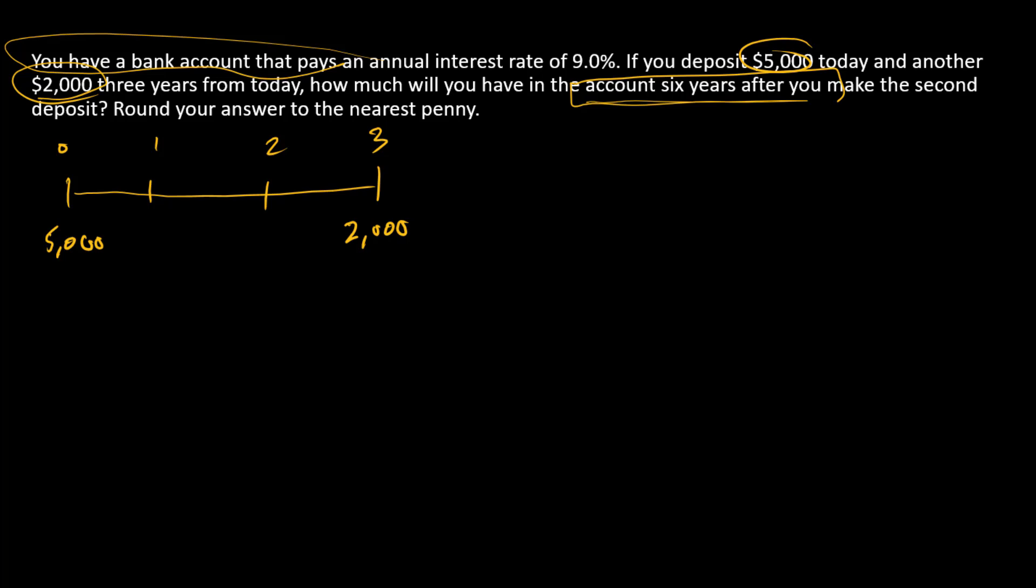Six years after you make the second deposit, we're going all the way out to year nine. And so we're asked to find how much we'll have in the account. So we're looking for a future value, and that future value is at time nine.